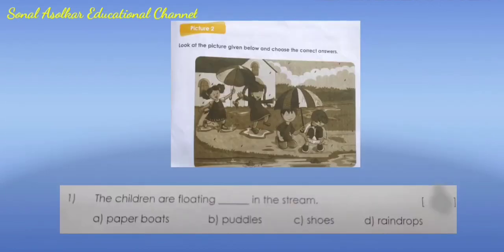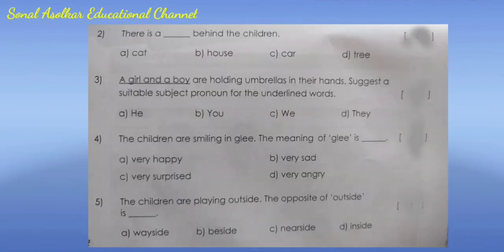After that, picture 2. Look at the picture given below and choose the correct answers. Question 1: The children are floating blank in the stream. The correct answer is option A - paper boards. Question 2: There is a blank behind the children. Options: A) cat  B) house  C) car  D) tree. The correct answer is option B - house.